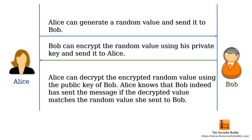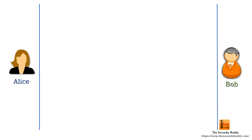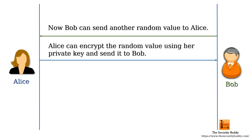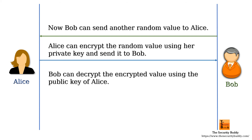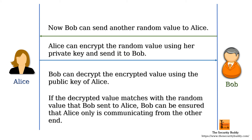We know that Bob's private key is secret to Bob alone. Similarly, Bob can send another random value to Alice. Alice can encrypt the random value using her private key and send it to Bob. Bob can decrypt the encrypted value using the public key of Alice. The private key of Alice is secret to Alice only, so if the decrypted value matches the random value that Bob sent to Alice, Bob can be ensured that Alice only is communicating from the other end. Alice and Bob will need to verify the public key of each other from the issuing certificate authority to ensure that the received public keys are authentic.